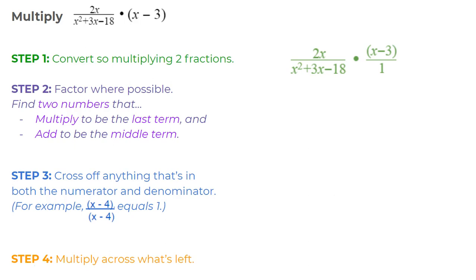What I'm doing is I'm looking for two numbers that multiply to be the last term, so multiply to be negative 18, and add to be the middle term, add to be 3. And so when I go through the different options, I realize it's positive 6 and negative 3. If I multiply 6 and negative 3, I get negative 18. And if I add 6 and negative 3, I get positive 3. So I'm going to factor that to this.